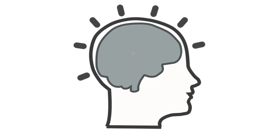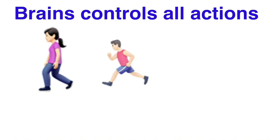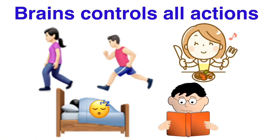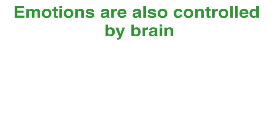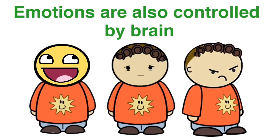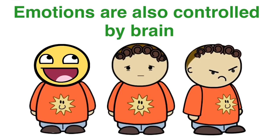Brain — the decision maker of our body. Whatever actions we do, like we walk, we run, we eat, we sleep, we study — every action of our body is controlled by the brain. Our emotions — being happy, being sad, being angry — all are controlled by the brain again.